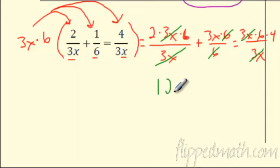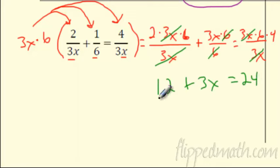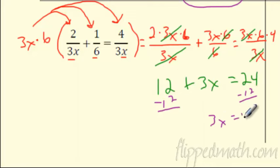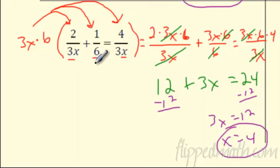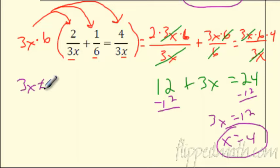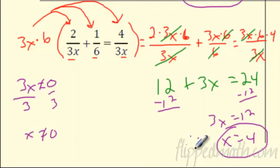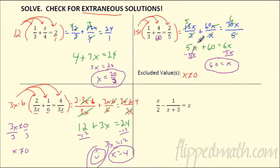After canceling, we're left with 2 times 6 equals 12, plus 3x, equals 24. Fractions are gone. Subtract 12 from both sides: 3x equals 12, so x equals 4. Is 4 okay? Go back to the problem — x is not allowed to be 0 because 3x can never equal 0. x equals 4 is not zero, so we're happy.